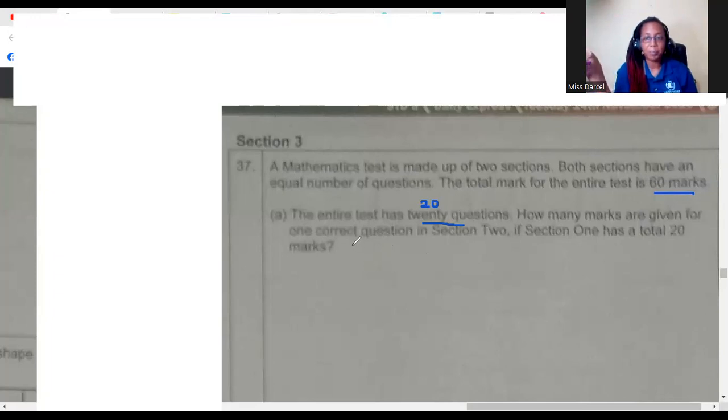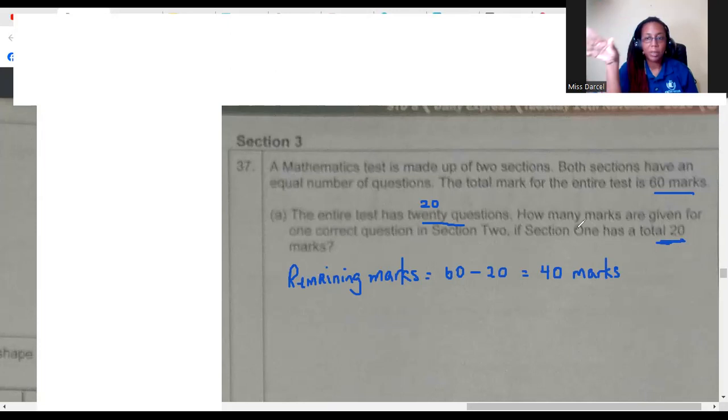Let's go. Remaining marks - we have 60 minus 20, that's 40 marks. So what this means is section one is worth 20 marks, but section two is worth 40 marks. So we need to figure out how many questions, but they have the same number of questions.